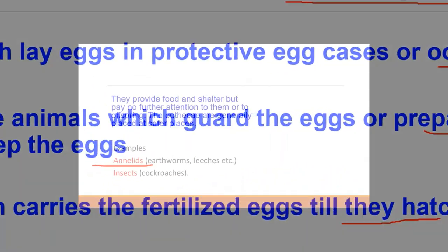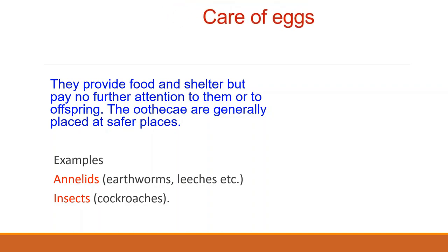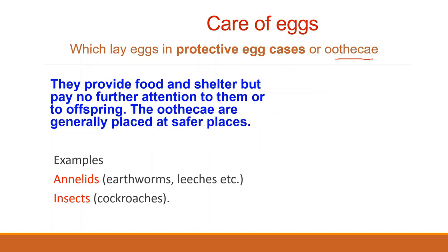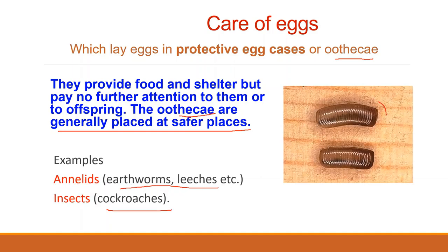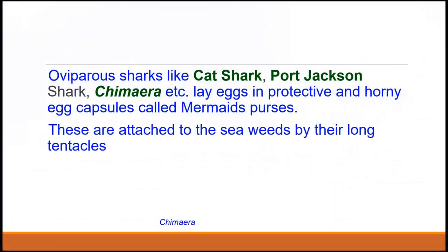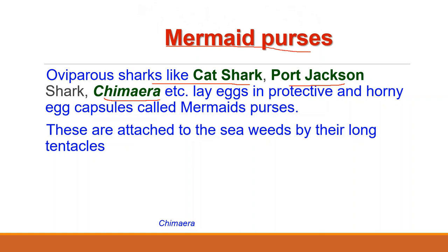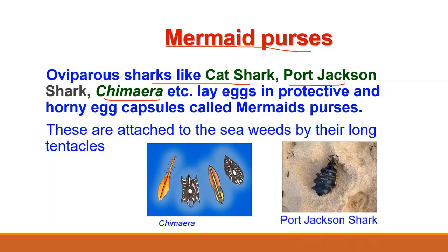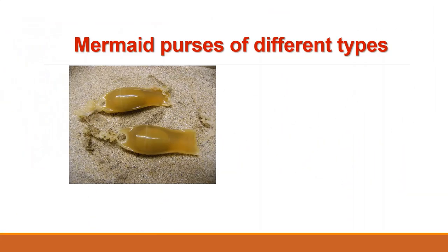The first group lays eggs in protective egg cases or ootheca and provides food and shelter but pays no further attention to them or to the offspring. The ootheca are generally placed at safer places. Examples include annelids like earthworms and leeches, and insects. Here in the picture you can see the ootheca of cockroach. Oviparous sharks like cat shark and port jackson shark, for example chimera, lay eggs in protective horny egg capsules called mermaid purses, which are attached to seaweeds by their long tentacles. After laying the eggs and placing the ootheca at safer places, they are not cared for by the parents.